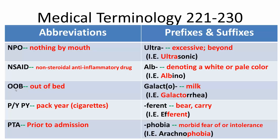Then we have OOB, out of bed. Then we have P/Y, or pack year, meaning the number of packs of cigarettes per year. Then we have PTA, prior to admission.